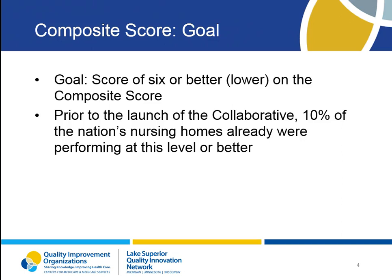When reviewing your composite scores, keep in mind that the goal for the NNHQCC is to achieve a score of 6 or better — better meaning lower. This was established as the goal because prior to the launch of the NNHQCC, 10% of the nation's nursing homes were already performing at this level or better. As your home incorporates QAPI principles and practices into your culture, and quality improvement becomes a data-driven systems approach, you should see improvement in all of your quality measures. These improvements will be reflected as a decrease in your composite score.